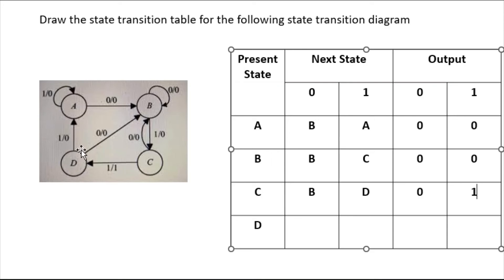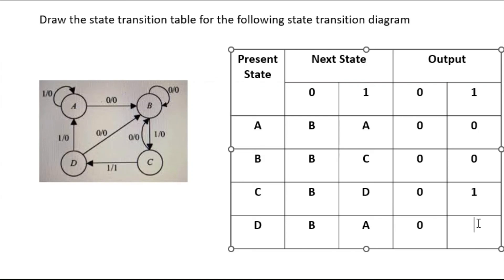Now come to state 'd'. When input is 0, it is going to 'b' and output is 0. When input is 1, 'd' is going to state 'a' and output is 0.